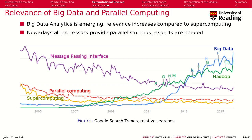Let's talk about big data and parallel computing and their relevance. Here you can see Google search trends showing relative searches over the years for different terms: parallel computing, supercomputing, message passing interface — which is a common parallel computing interface — and big data and Hadoop, which is a big data tool. Around 2012, the terms big data and Hadoop rise significantly in search trends, while parallel computing and message passing interface decline somewhat. That doesn't mean they are not important anymore — it means the industry has rightly recognized the benefits of big data, and it's easy to use. Simulations and scientific computing are also a competitive advantage, but a bit harder to harness.